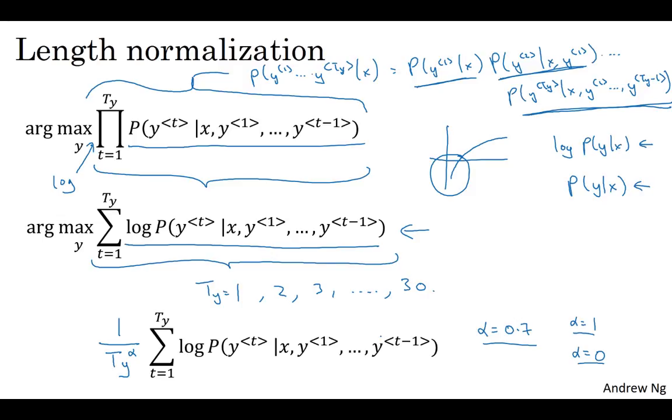Then you would look at all the output sentences and score them against this score. And so you can take your top sentences and just compute this objective function on the sentences that you have seen through the beam search process. And then finally, of all these sentences that you evaluate this way, you would pick the one that achieves the highest value on this normalized log probability objective. Sometimes it's called a normalized log likelihood objective. And then that would be the final translation you output. So that's how you implement beam search.